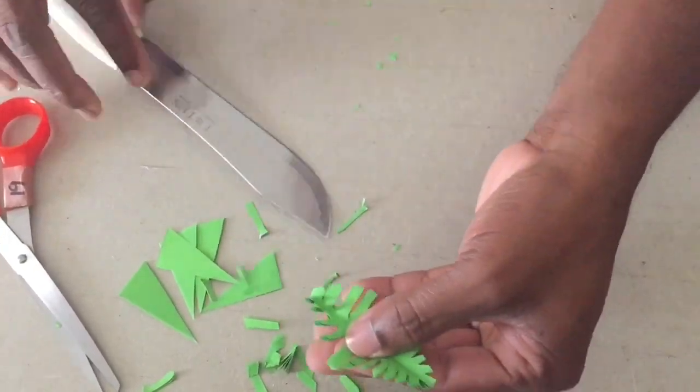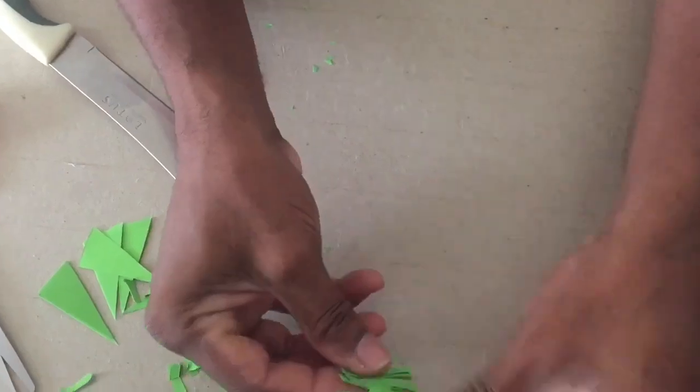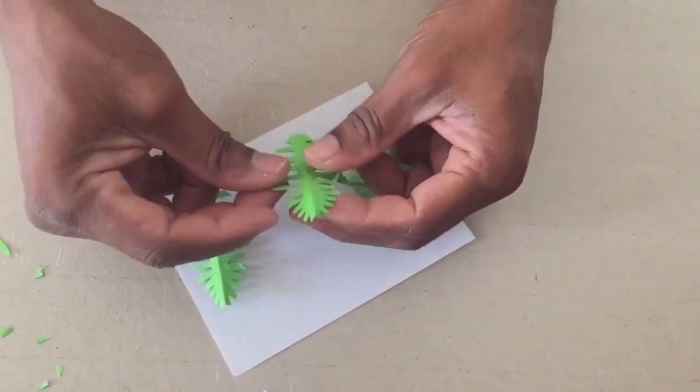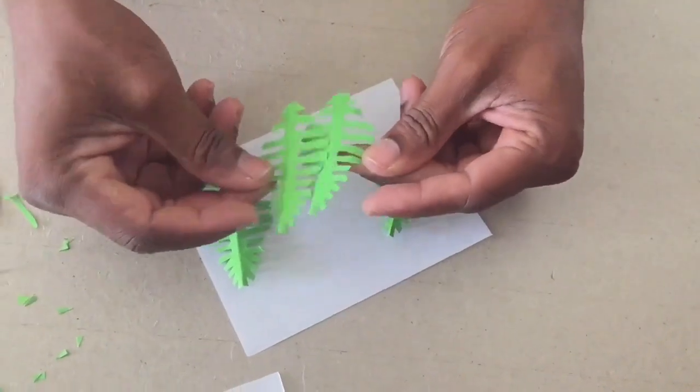Open our leaves. Lay that down. So now we have four leaves, all in one cut.